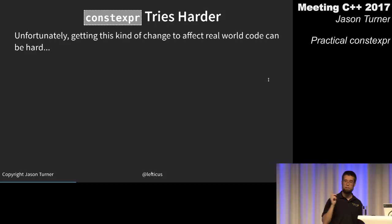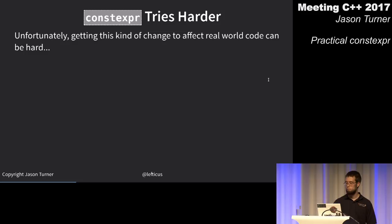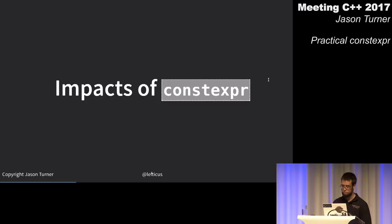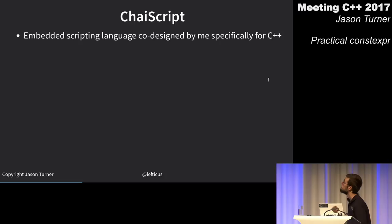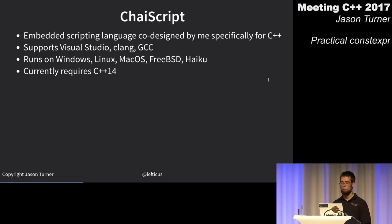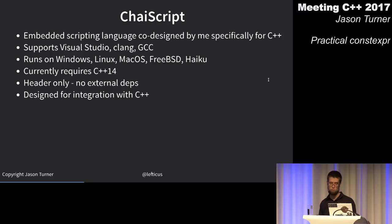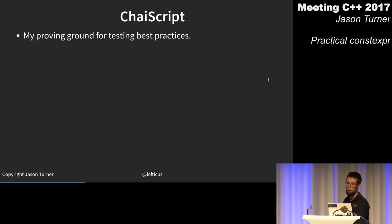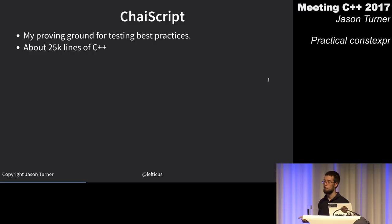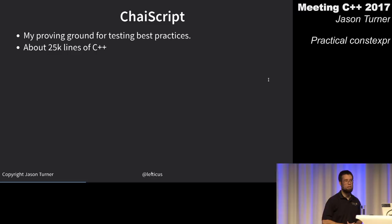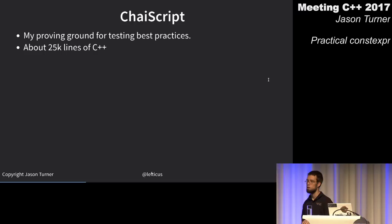Now talking about impacts of applying constexpr to ChaiScript — no surprise there. It's my embedded scripting engine for C++, supports lots of compilers and operating systems, is header-only, and is about 25,000 lines of C++ — slightly bigger than trivial but small enough to keep the structure in my head.